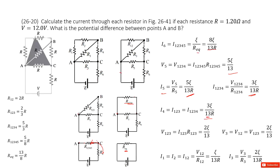Now we look from point A to point B. V1.2.3 equals I1.2.3 times R1.2.3, which equals 2 epsilon over 13. This also equals V3 and V1.2, since these are two branches in parallel. So V3 equals V1.2 equals 2 epsilon over 13. We get I1 equals I2 (series connection) from V1.2 over R1.2, and I3 equals V3 over R3.